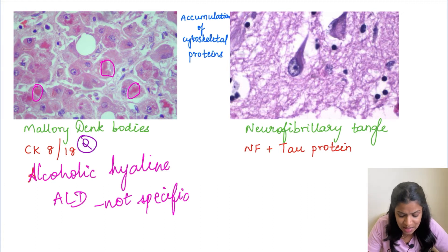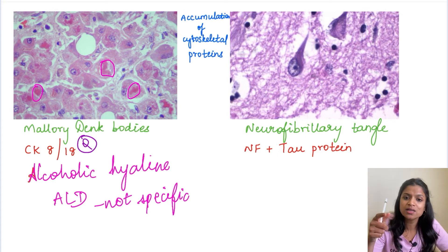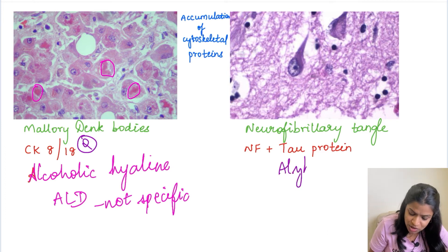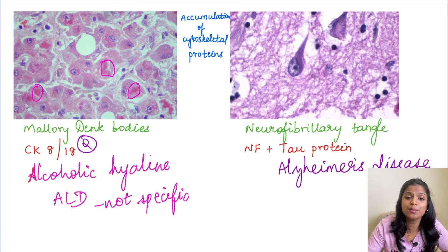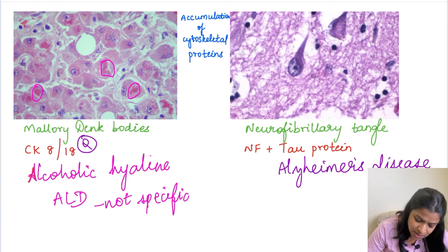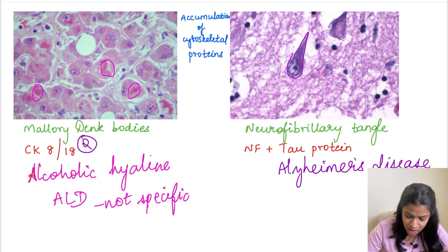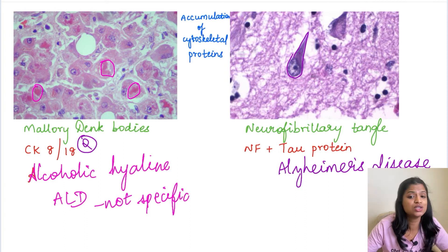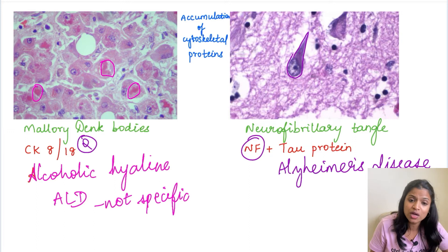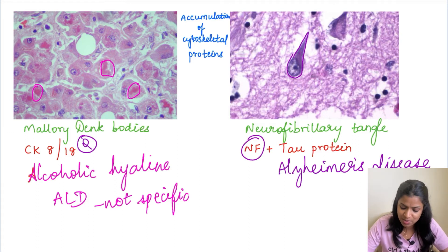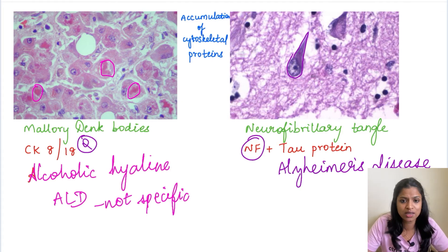The next example is the neurofibrillary tangle, a classical feature of Alzheimer's disease. In Alzheimer's disease we see neuritic plaques and neurofibrillary tangles. The neurofibrillary tangle appears as a flame-shaped cell and is composed of the accumulation of neurofilament plus tau protein. Since neurofilament is an intermediate filament, Alzheimer's disease with neurofibrillary tangles is also an example of cytoskeletal protein accumulation.